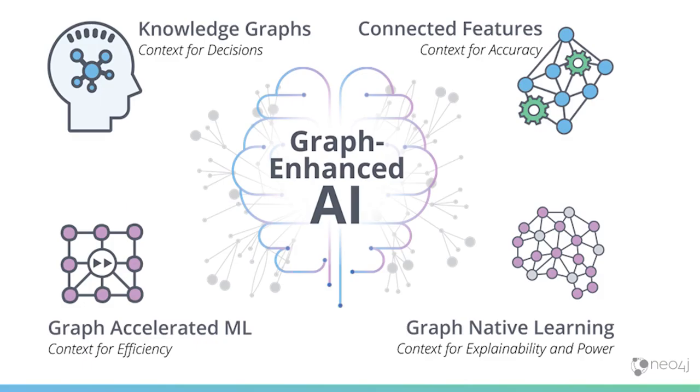At Neo, we have four pillars of AI. You start with a knowledge graph — you need data to do data science, and this gives you context for your decisions. From there you can go in two directions. You have graph-accelerated AI, where you pull out relevant subgraphs to solve the problem you want to solve. You don't want to throw the kitchen sink in; for this problem, you want this subgraph and these connections to build features.